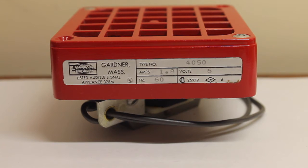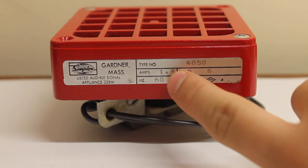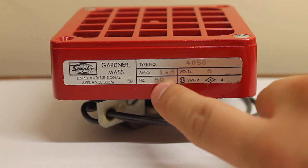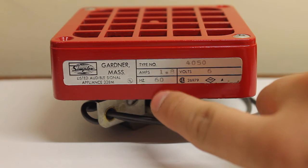And just to prove that this is in fact a 4050, there you go, 4050 right there, 1.8 amps, 6 volts, and here's how to tell if it's AC. Normally, if it was DC, it would just say DC here. However, this indicates 60 hertz, typical AC current, so it's AC.